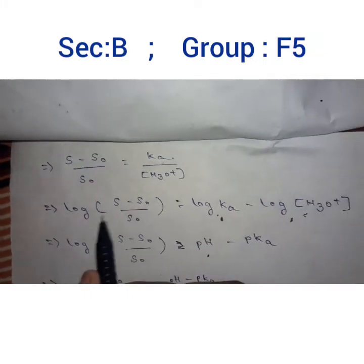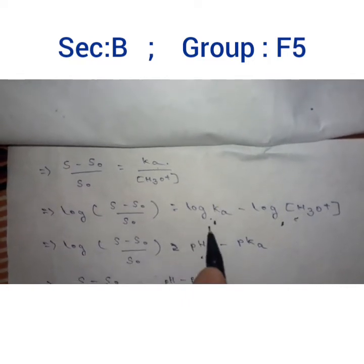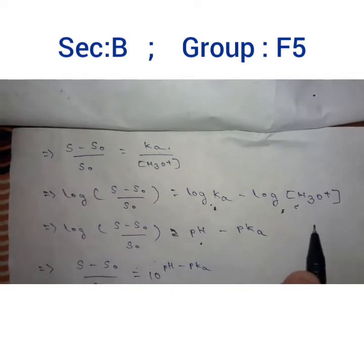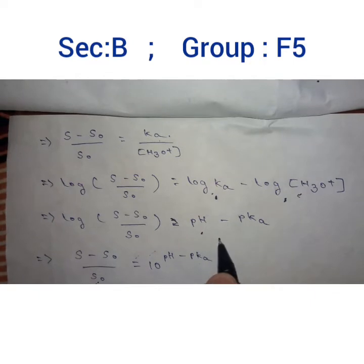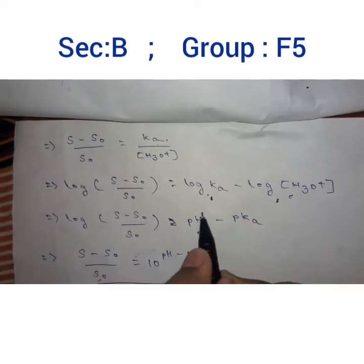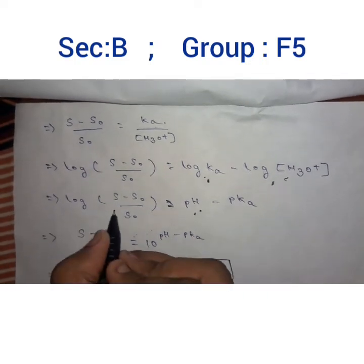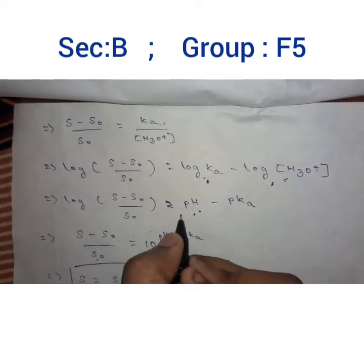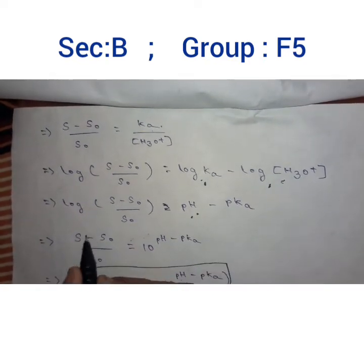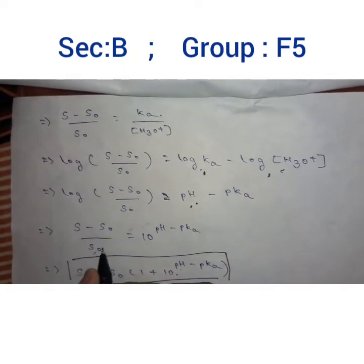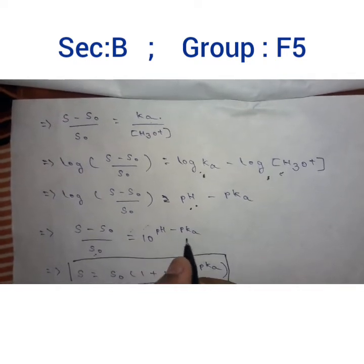Taking logarithm on both sides: log[(S - S0)/S0] = log Ka - log[H3O+]. We know that -log[H3O+] equals pH and -log Ka equals pKa.